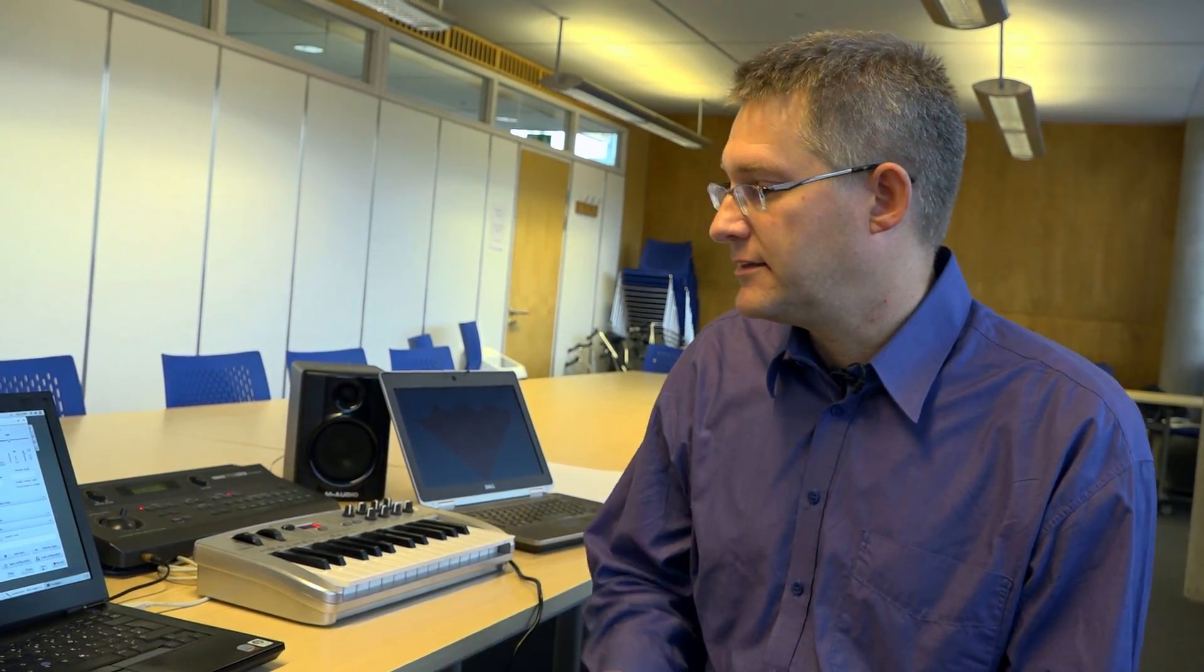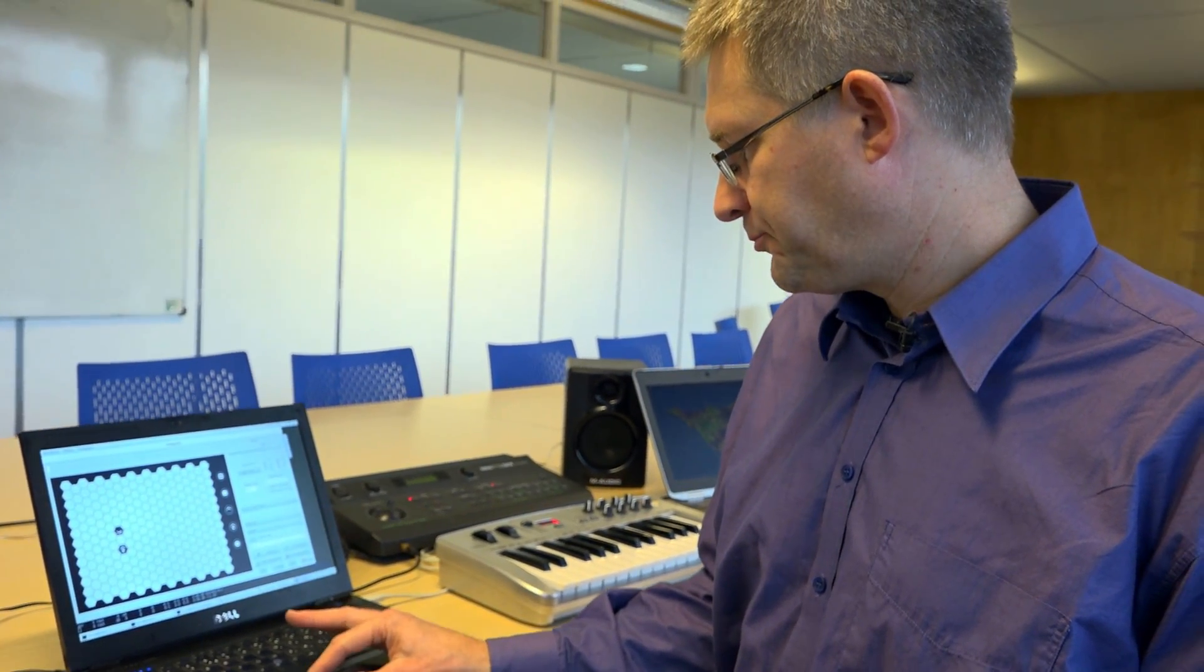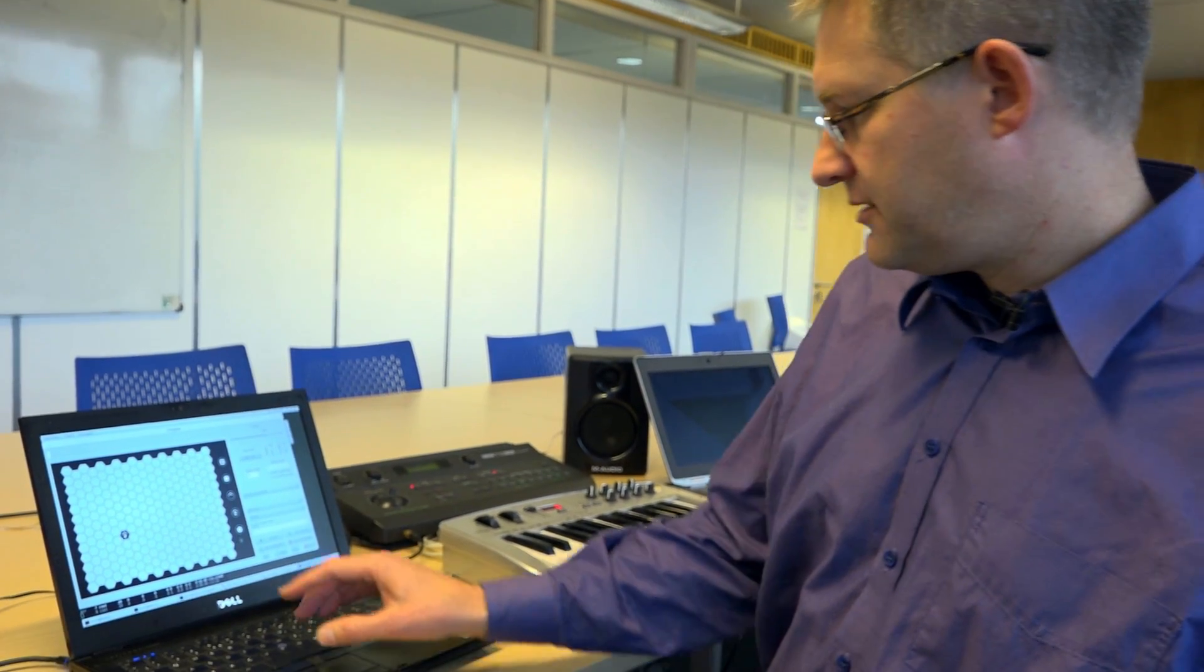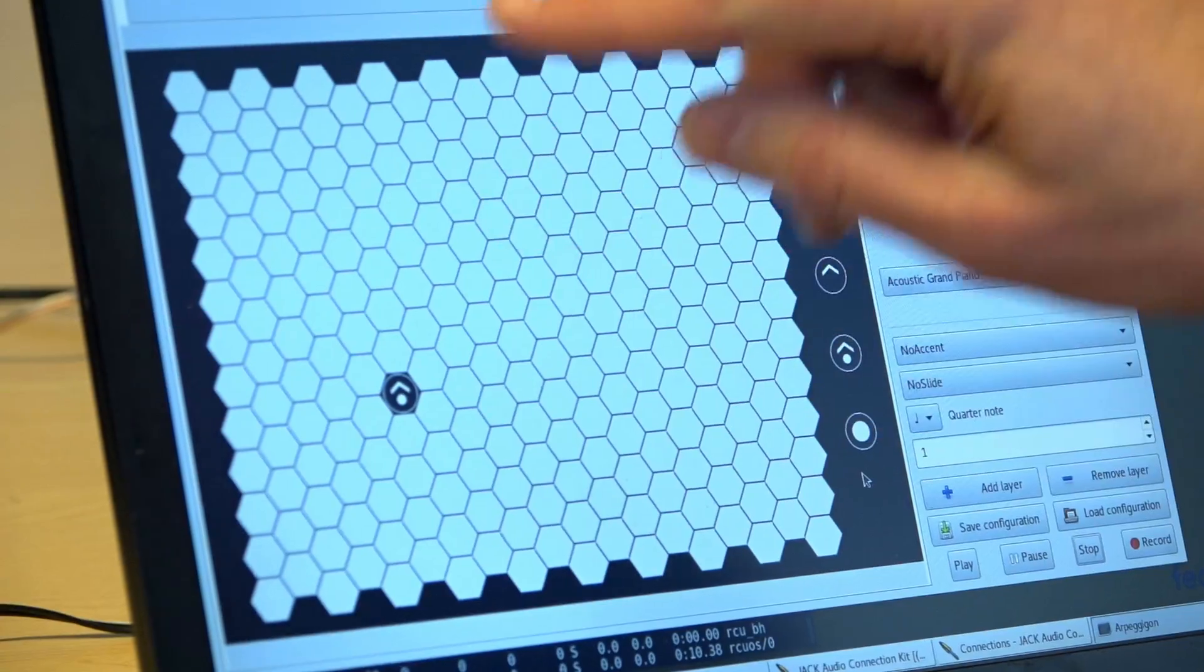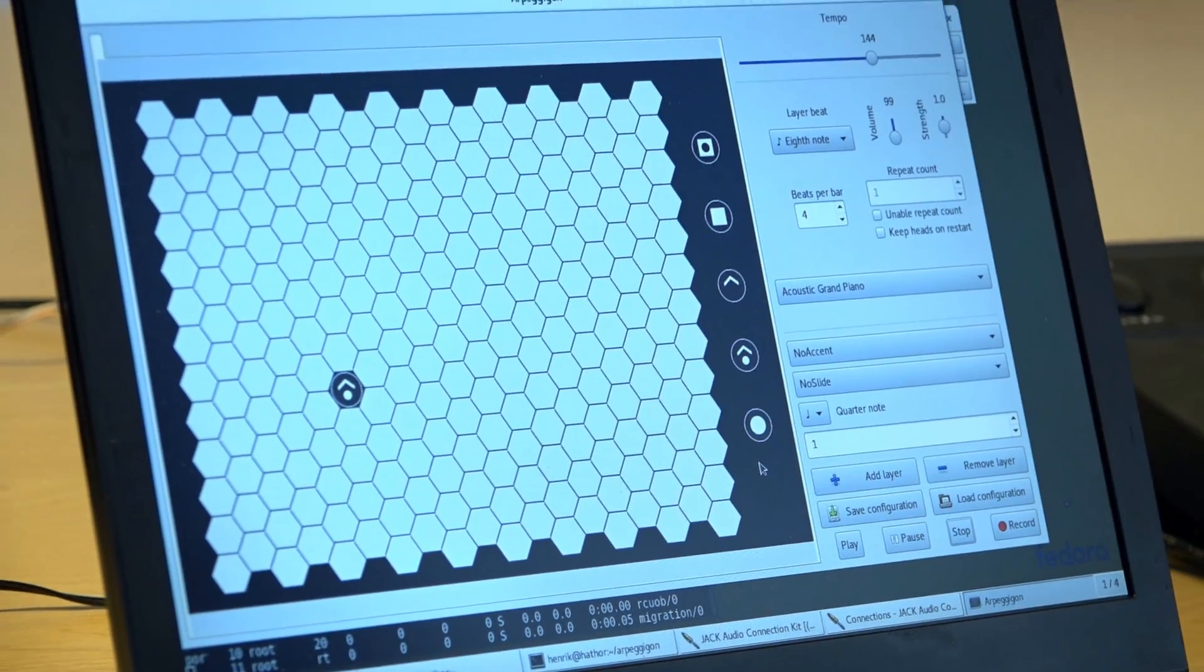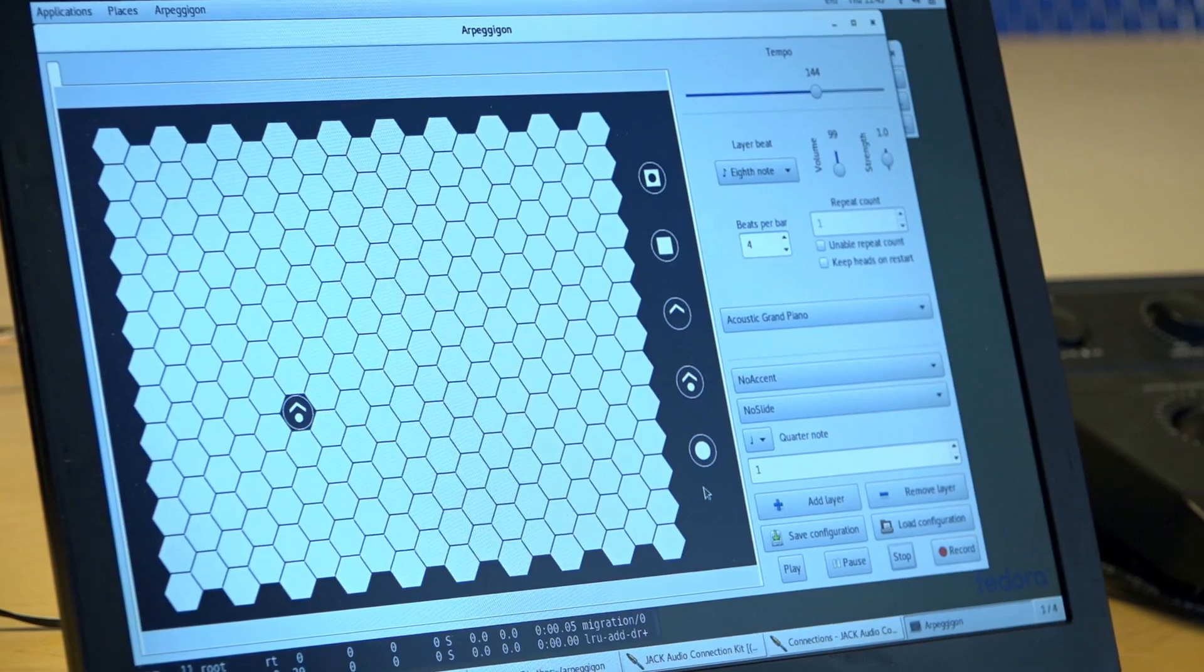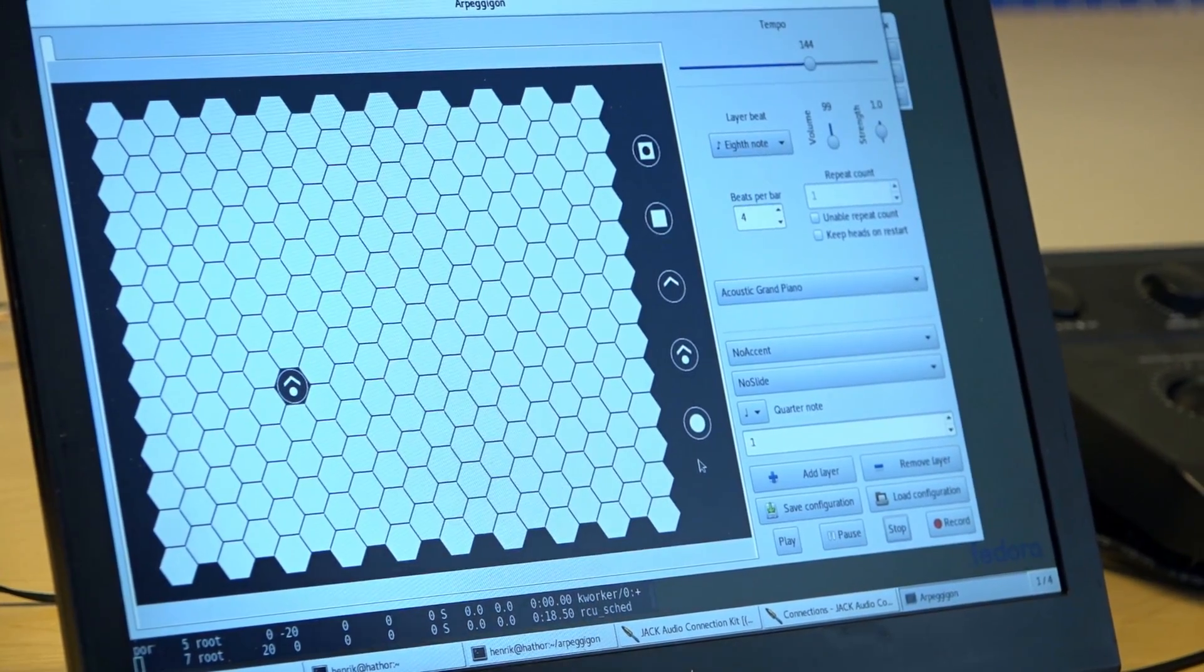The arpeggigon is based on something called the harmonic table. The harmonic table is this kind of hexagonal grid. Musical notes are placed on this grid. In each direction, we have a specific musical interval. So if you go north, it's a perfect fifth. If you go northeast, it's a major third, and so on and so forth.